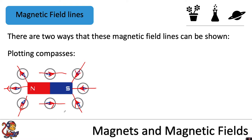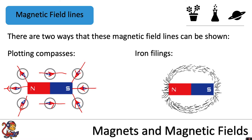Alternatively, you could put the bar magnet in a pile of iron filings, and the iron filings would arrange themselves along the magnetic field lines. You can see it looks very similar to the magnetic field line image, with an arching shape going over the top and bottom, then straightening out in the middle.